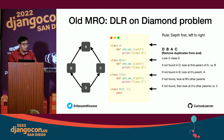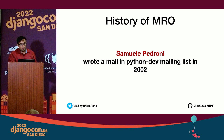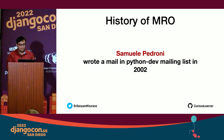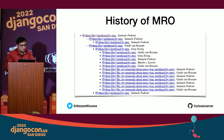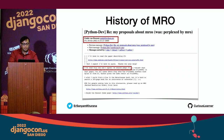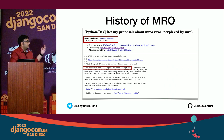Before moving on to C3, let's look at the history of MRO. It all began with a mail written to the Python dev mailing list back in 2002 by Samuel Pedroni, who was trying to wrap his head around MRO computation in Python 2.2. It led to a long thread, and ultimately Guido van Rossum, creator of Python, said he had read the proposal and agreed that Python should adopt C3.